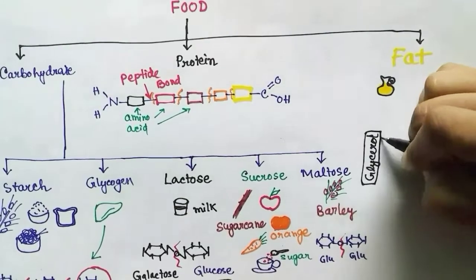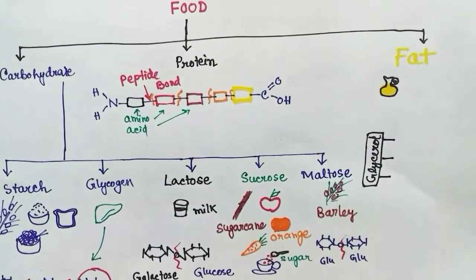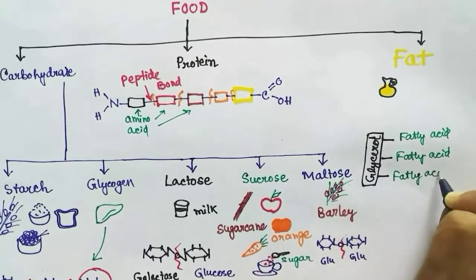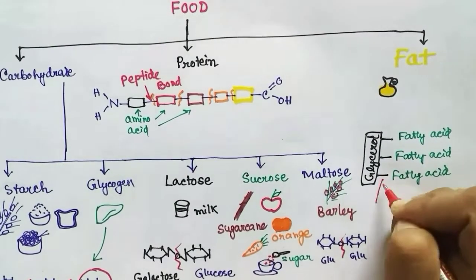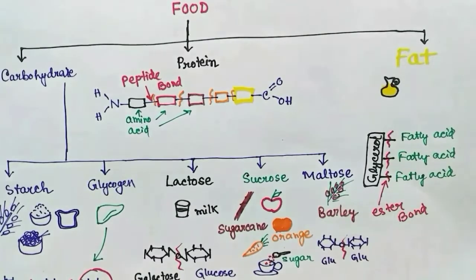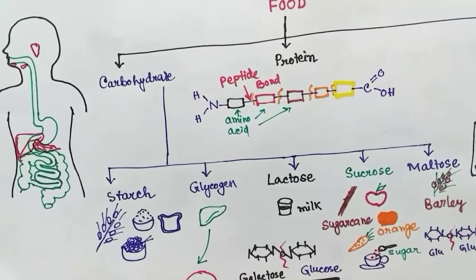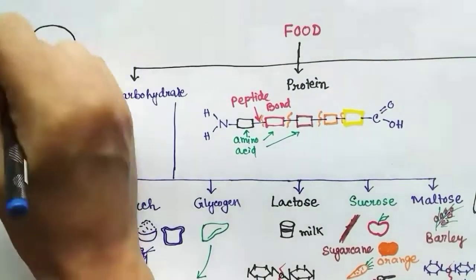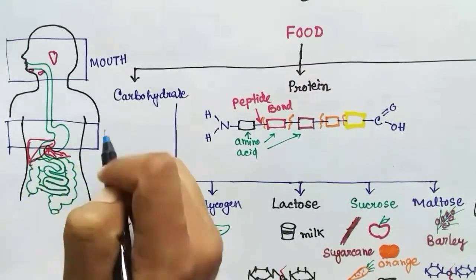The third category of food is fat or lipid. Fat is made up of glycerol and fatty acids. In one molecule of fat there is one glycerol attached to three fatty acids — they are bonded to each other by ester bonds. So in digestion we have to break the ester bonds by enzymes to get the free fatty acids and glycerol that can be absorbed by the body.